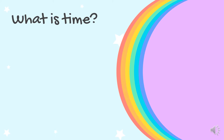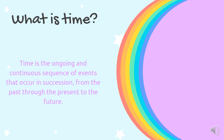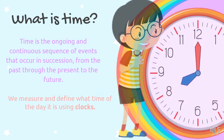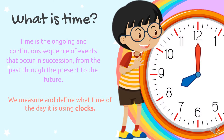What is time? Time is the ongoing and continuous sequence of events that occur in succession from the past through the present to the future. We measure and define what time of the day it is using clocks.